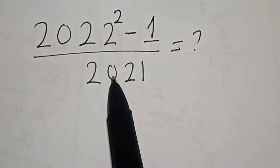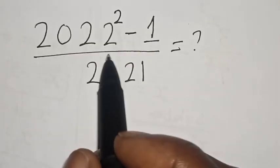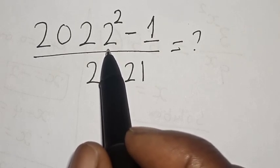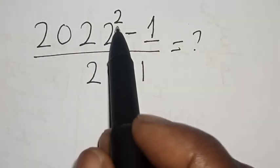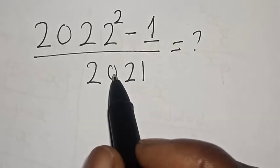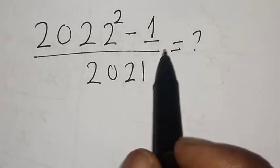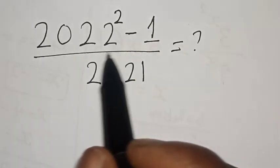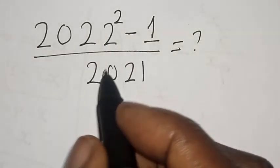Hi everyone, welcome to my class. In this class we quickly want to solve this problem: 2022 squared minus 1 over 2021 is equal to what? But before we proceed, please don't forget to like, share, comment and subscribe. Thank you. Solution.